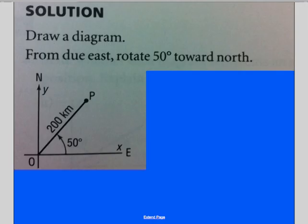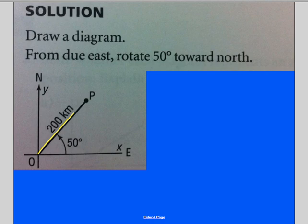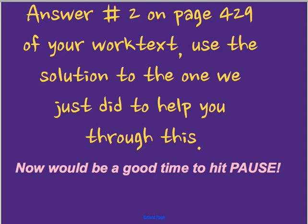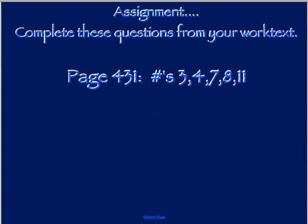The book shows the same solution: 200 kilometers, an angle of 50 degrees, and those two distances solved using SOH-CAH-TOA — nothing anyone can't do. Now do question two on the right-hand side of the page under 'Check Your Understanding' — pause the video to finish it. For the assignment, do page 430–431, numbers 3, 4, 7, 8, and 11. If you're having trouble, ask Mrs. Fickert, ask a buddy, or send me a text. Good luck!